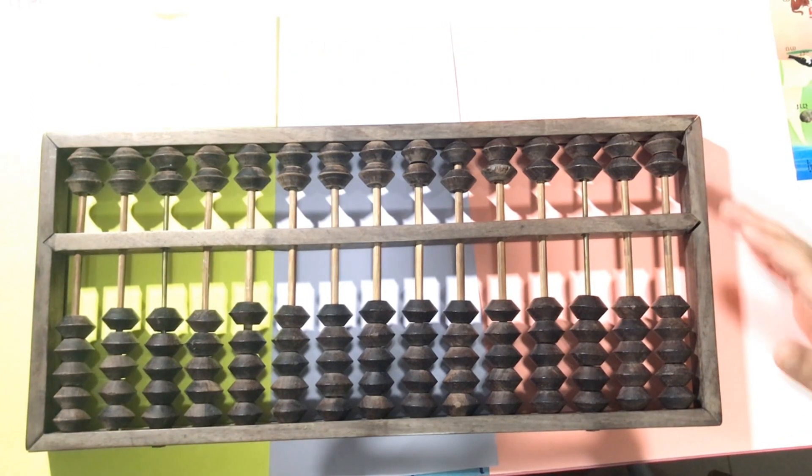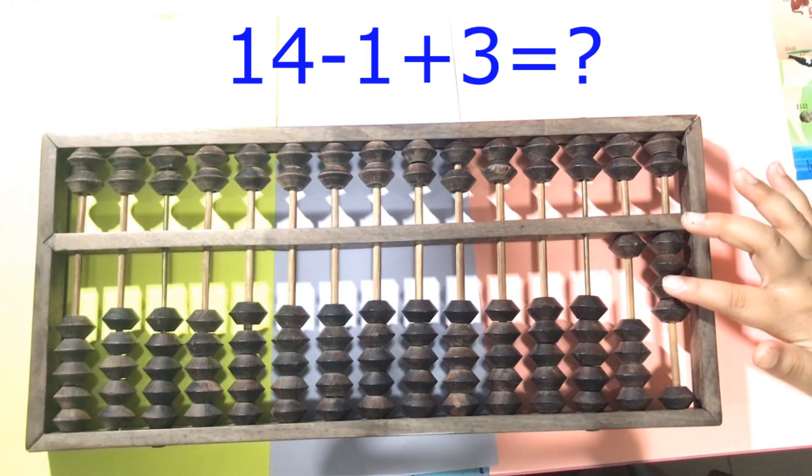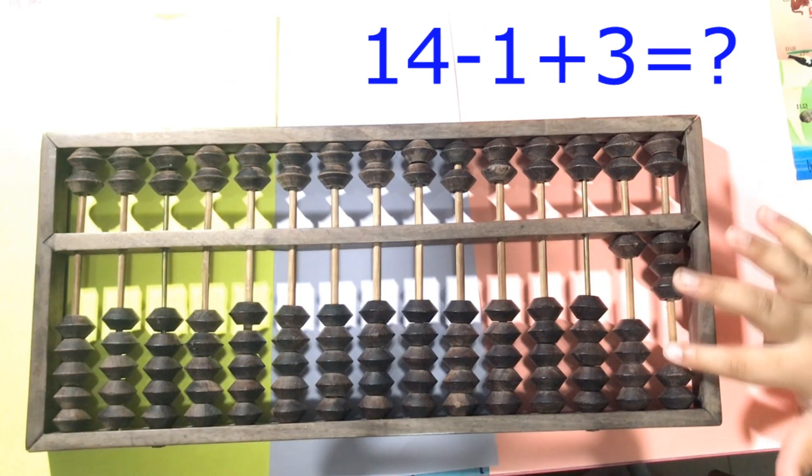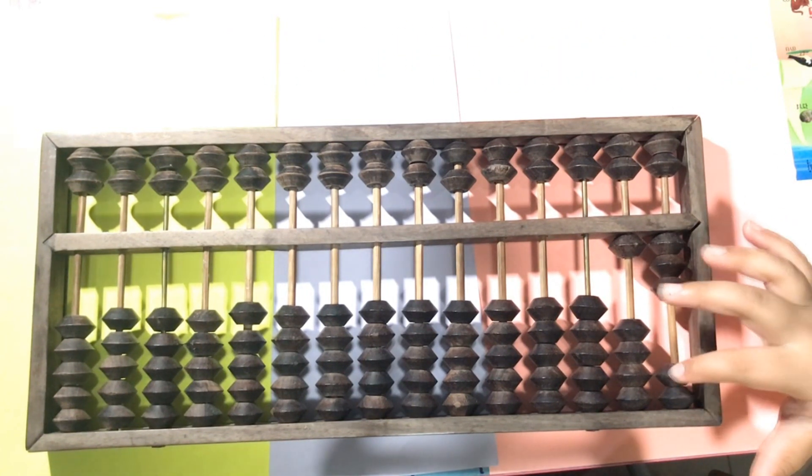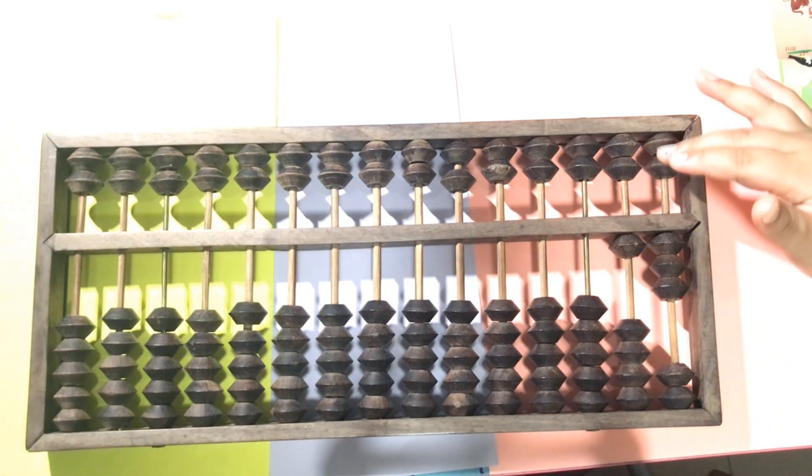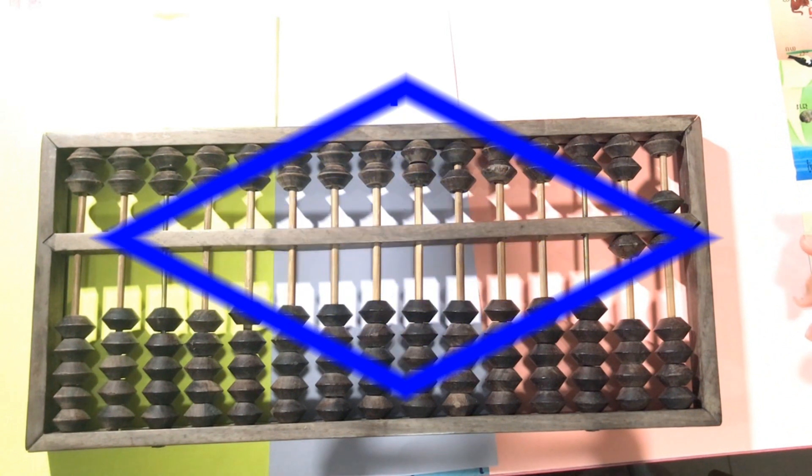Example number 1: 14 minus 1 and plus 3. So we don't have 3 yet here, right? We have only 1, 2. So let the formula tell you: plus 5 and minus 2. The answer is 16.